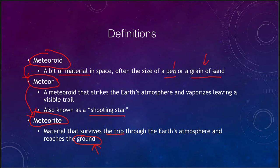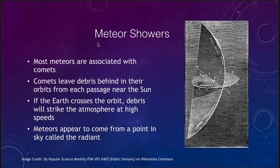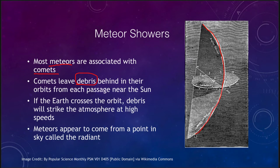Let's look at where these come from. We have what we call a meteor shower. Most meteors are associated with comets. When comets travel through the solar system, especially when they come close to the sun, material is vaporized off their surface, causing them to leave debris behind in their orbits. That material continues to travel along the orbit of the comet, following exactly the same orbit each time it passes close to the sun.